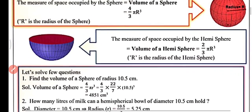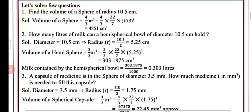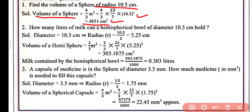We have some problems based on the volume of sphere and hemisphere. The first one: find the volume of a sphere of radius 10.5 centimeters. The volume of sphere = 4/3 π r³. Putting in the values: 4/3 × (22/7) × (10.5)³. After solving, you will get 4851 centimeter cube as the volume of the sphere with radius 10.5 centimeters.